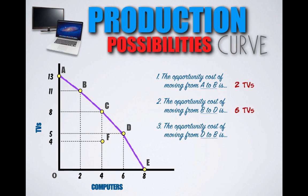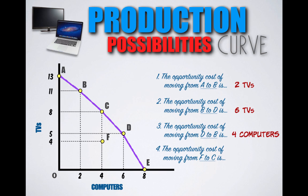Moving from Point D to Point B, Country B reallocates resources to boost TV production and reduce computer production. Reducing computers from six to two allows TV production to increase from five to eleven. The opportunity cost of moving from Combination D to B is four computers. Moving from Point F inside the PPC to Point C on the PPC, Country B simply becomes productively efficient, gaining four TVs while still producing four computers. The opportunity cost of moving from F to C is nothing, because nothing is lost.